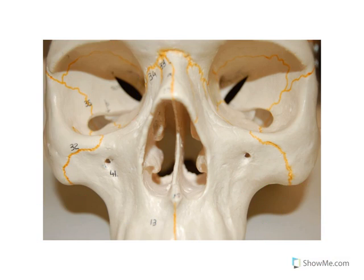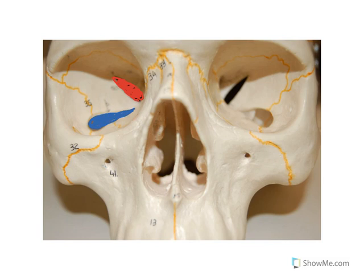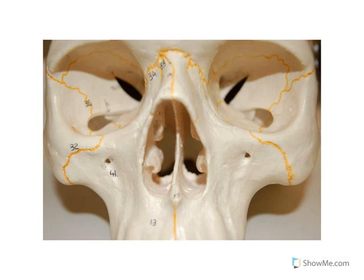Continuing on inside the eye orbit, we can see two structures on the sphenoid bone. This one here is the superior orbital fissure. In blue, I'm going to show you the inferior orbital fissure. We can see both the superior and inferior bilaterally. In purple, I'm going to show you the optic canal — and here we can see the optic canal. That is pretty much all we can see from this view of the bony eye orbit.